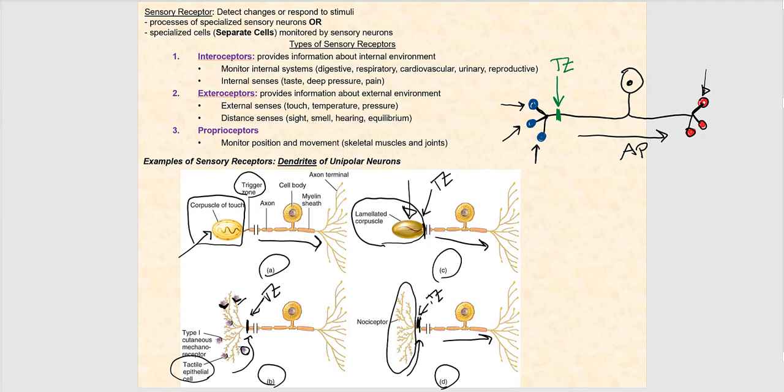At the trigger zone, we generate an action potential which then travels along the length of this axon, eventually reaching the synaptic knob. Please remember that all of these sensory neurons are sending information to the central nervous system — this is what makes them sensory afferent. Structurally speaking, these are all unipolar neurons.